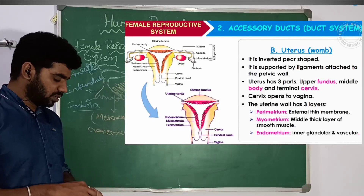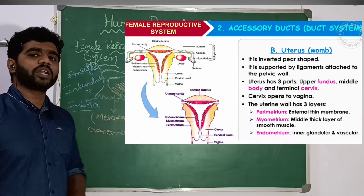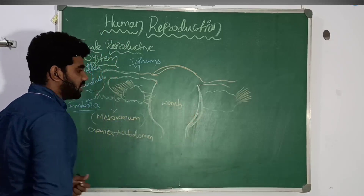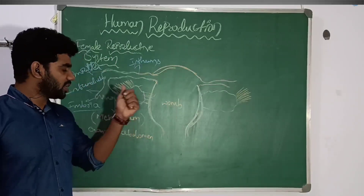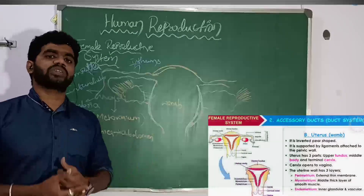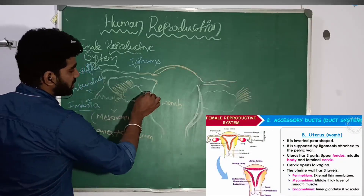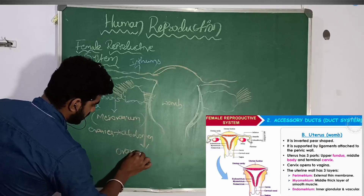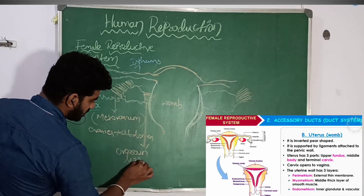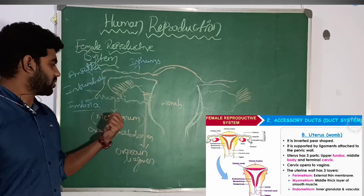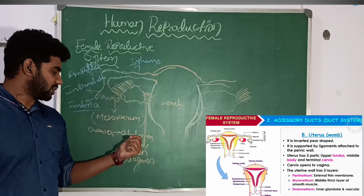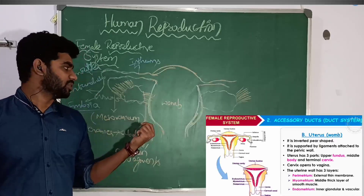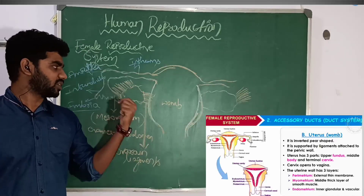Next we will discuss about the uterus. The uterus is an inverted pear-shaped structure. The ovaries are attached to the uterus by ovarian ligaments, and the ovaries are attached to the abdominal wall by the mesovarium.